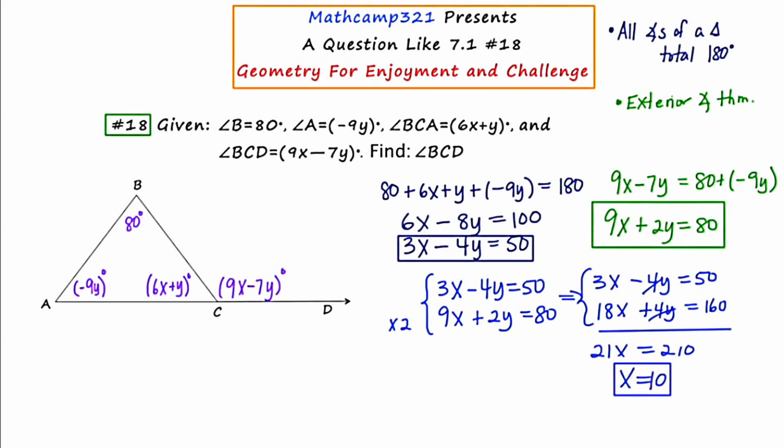And now what I'll do is I'll back substitute this answer of 10 into one of my earlier equations. I'll pick one that's easy to work with, maybe this one here. And I'll say that 3 times 10, because that's what x is, minus 4y is equal to 50. 3 times 10 is 30, so 30 minus 4y is equal to 50.